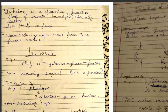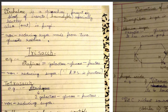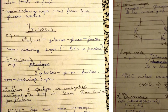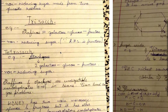Trehalose is also a disaccharide but it is present in the body of insects, especially beetles, and also in fungi. It is a non-reducing sugar made up of two glucoside residues. The name is trehalose. Now trisaccharides — we only need to study raffinose, which has galactose, glucose, and fructose.